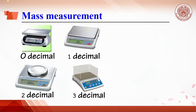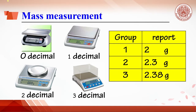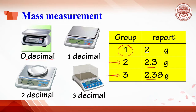The first measurement device is mass measurement. Electrical balances are available in various decimal precisions. The higher the decimal, the more accurate the data. Looking at these three student group reports of an object's weight, it can be concluded that student group 1 uses a no-decimal balance, while groups 2 and 3 use higher accuracy balances.